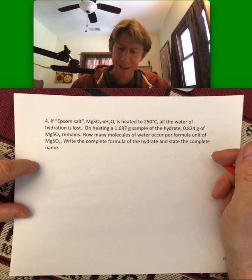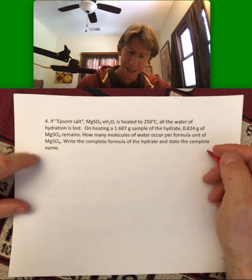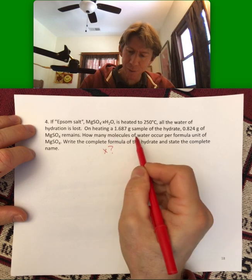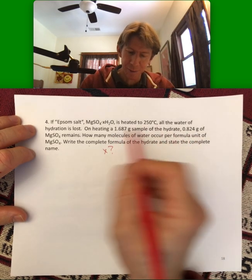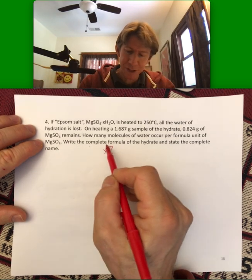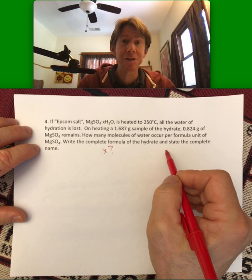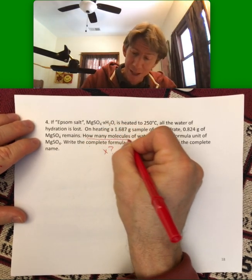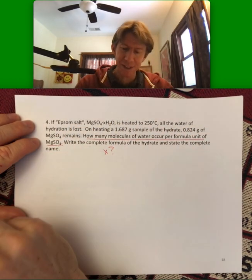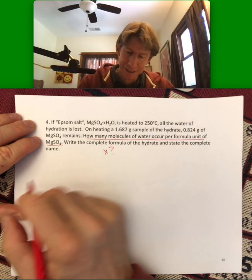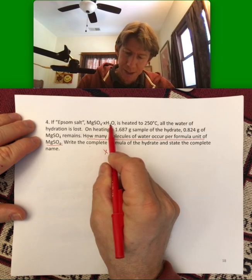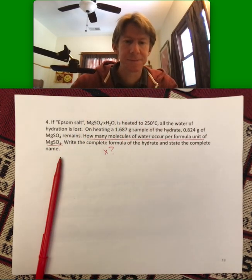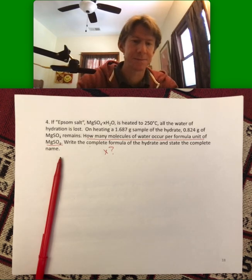This one is the same type of thing. It's asking, it's got the wording a little differently, but you're solving for X. It says how many molecules of water occur per formula unit of magnesium sulfate, and then it says write the complete formula of the hydrate and state the complete name. Please do that in your lecture notes so that I can see it. But this is just another way, and this is not a way I would use on the homework but this is just another way of saying what is X, because X is the molecules of water per formula unit of magnesium sulfate.